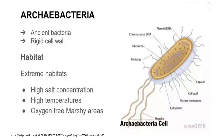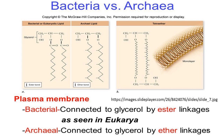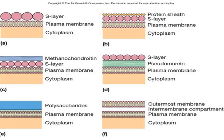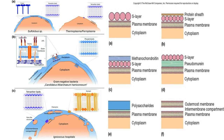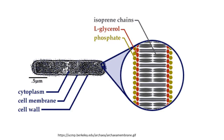Regarding the cell wall of Archaeobacteria: they can stain either gram-positive or gram-negative. Their cell wall structure and chemistry differs from that of eubacteria, and there is considerable variety in archaeobacterial cell wall structure. Many gram-positive archaeobacteria have a thick, single, homogenous wall layer like gram-positive eubacteria. Gram-negative archaeobacteria lack the outer membrane and complex peptidoglycan network of gram-negative eubacteria; instead, they usually have a surface layer of protein or glycoprotein subunits.